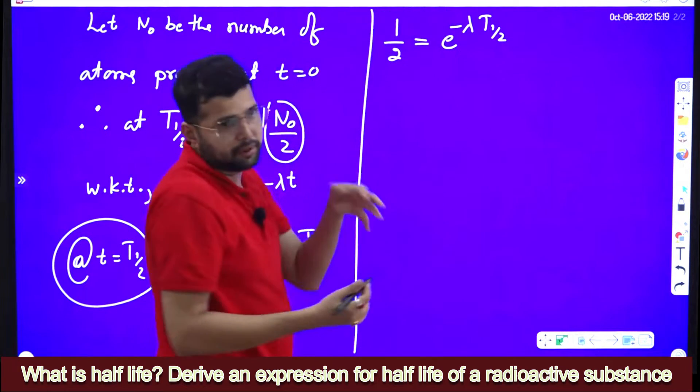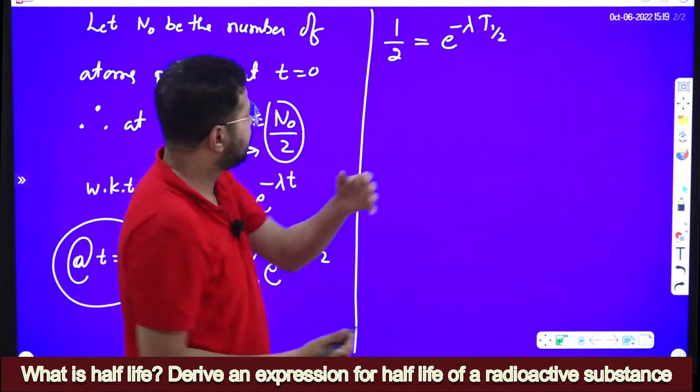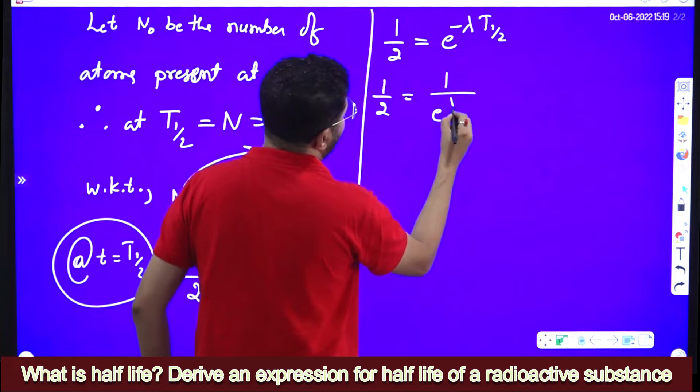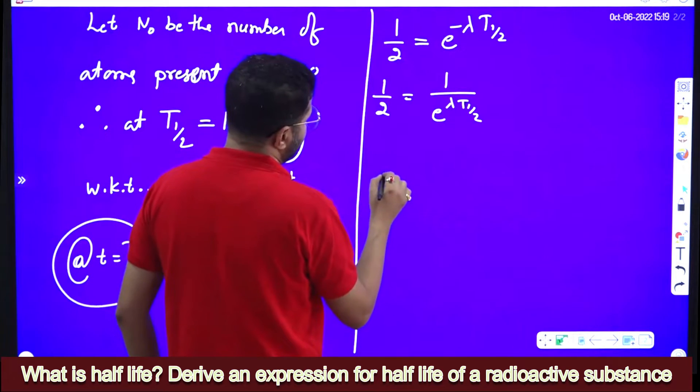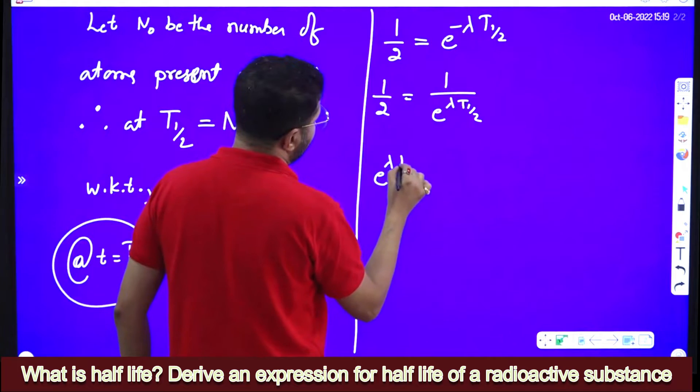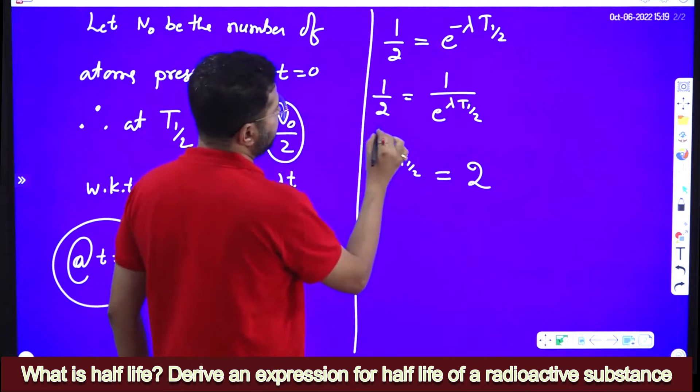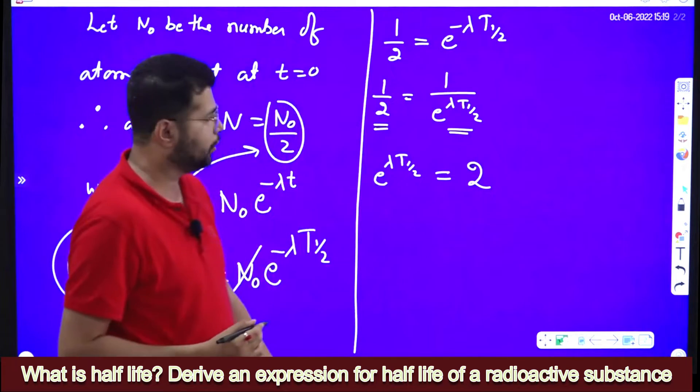So half is equal to e to the power minus lambda into t half. When that power comes down, the power becomes positive. What happens? 1 by 2 is equal to 1 by e power lambda into t half, or we can write e to the power lambda into t half is equal to 2, because denominator is equal to denominator.